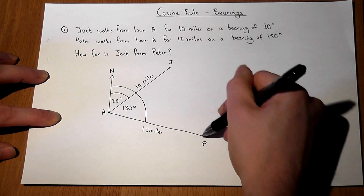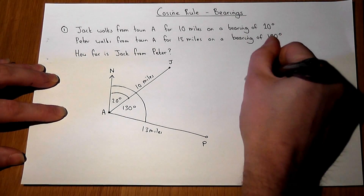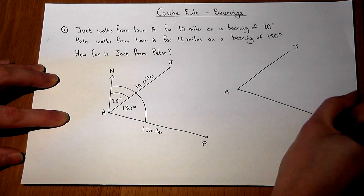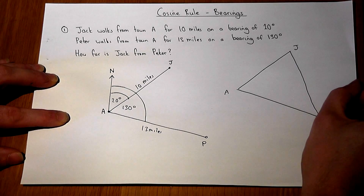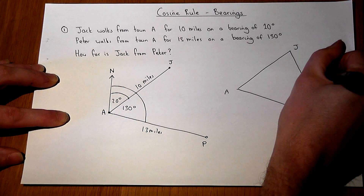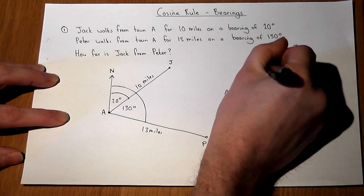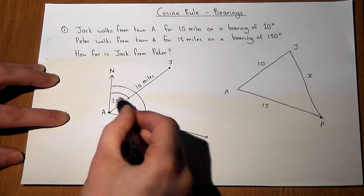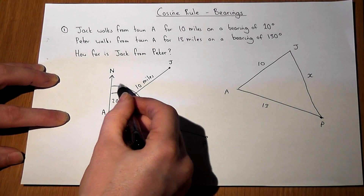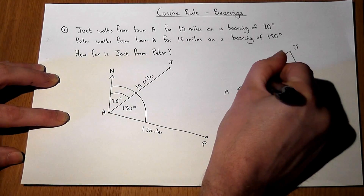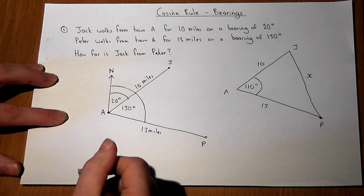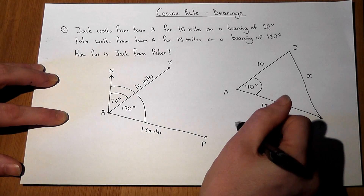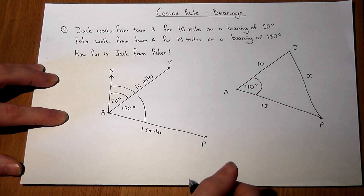We want that distance. If we redraw this as a triangle — A to J, A to P — the sides are 10 miles and 30 miles. This angle here is the difference between the two bearings: 130 minus 20, which is 110 degrees. We have the typical SAS (side-angle-side) configuration required for the cosine rule.